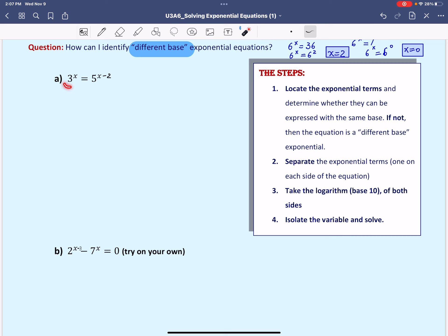So how can I identify whether the equation is an equation of different bases? In this case, we have 3 to the power of x equals 5 to the power of x minus 2. As you can see, we have two exponential terms, one on each side of the equation. And the bases are different, 3 and 5. Not only are the bases different, but we cannot express one base in terms of the other, or express both bases in terms of a common base. That's when we say the bases of these exponential terms are different.